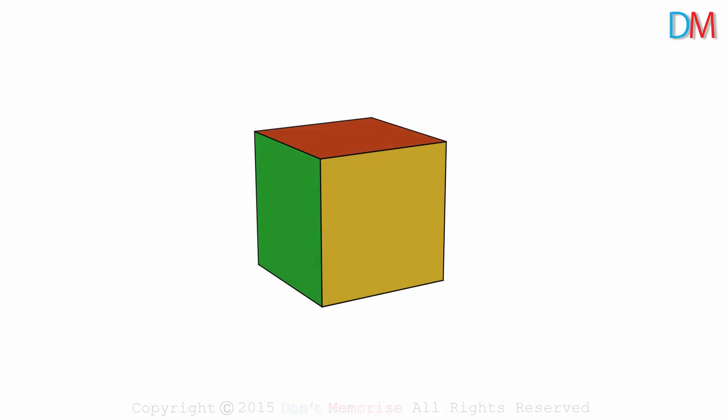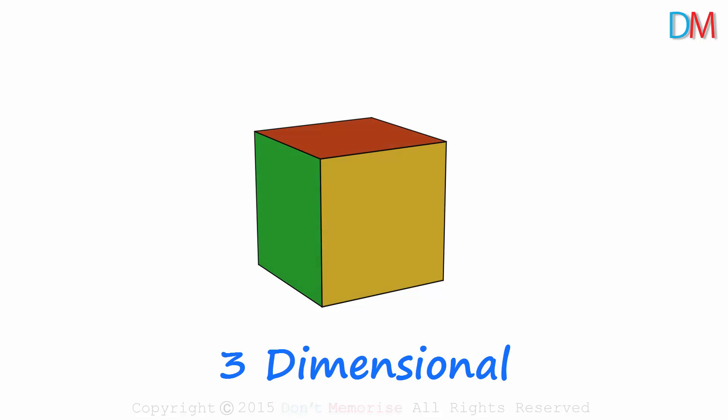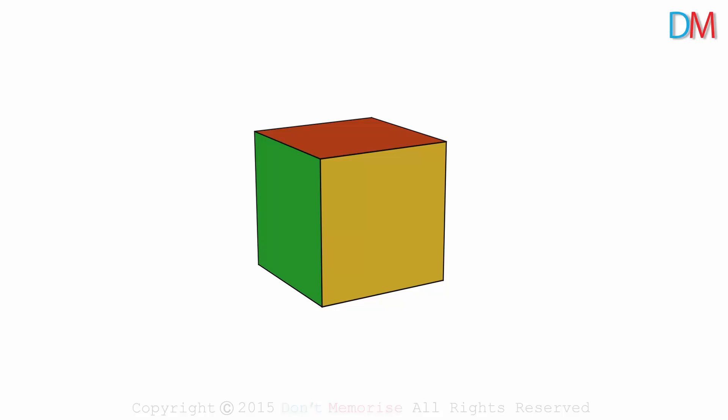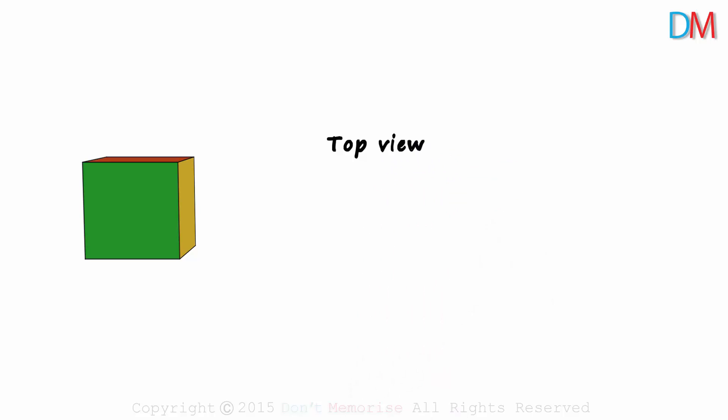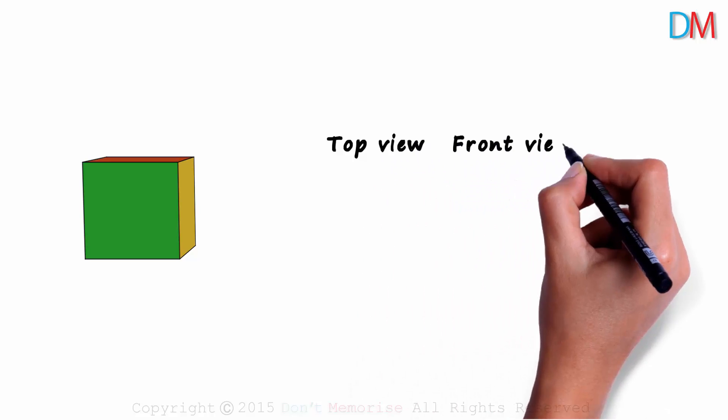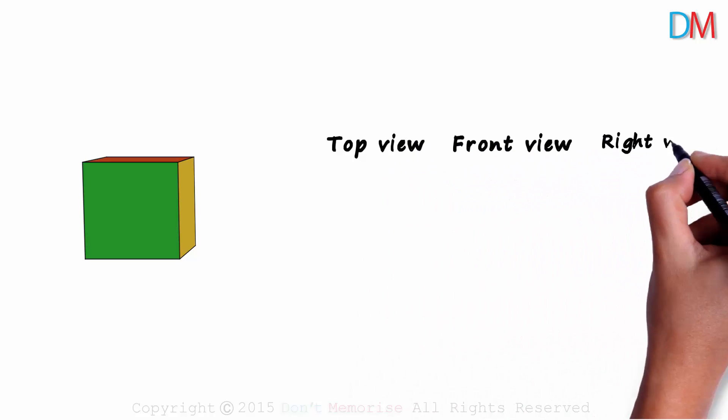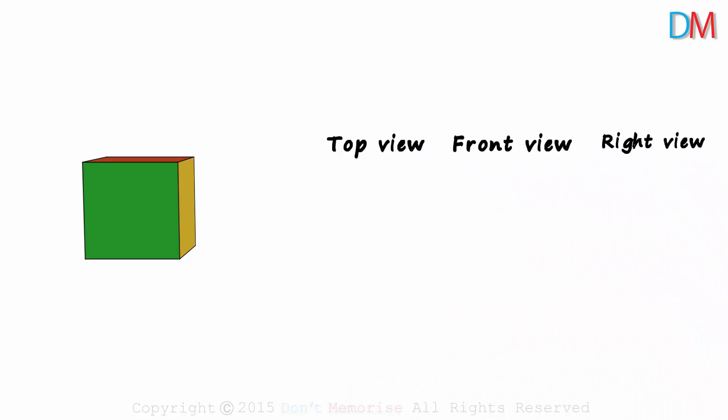Look at this colourful cube. It's three-dimensional as it occupies space. Now we will observe this cube from three different directions. We will look at the top view, the front view, and the right view. Let's get started.